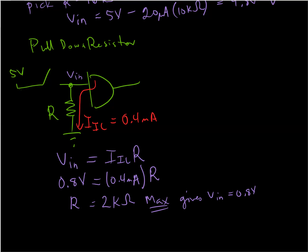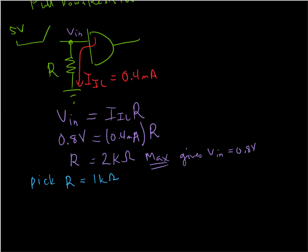I'm going to pick R equal to 1 kiloohm. In that case, I'm going to find that Vin is equal to 1 kiloohm times 0.4 milliamps, which equals 0.4 volts, and that's definitely okay. It's well within the very middle of that range voltage of what is considered a low input voltage.